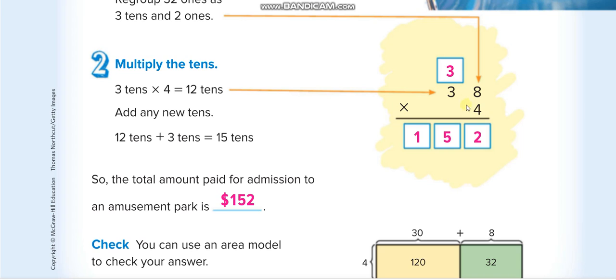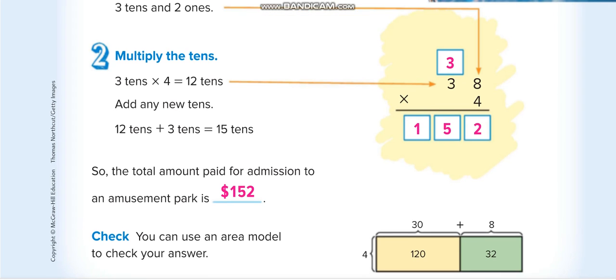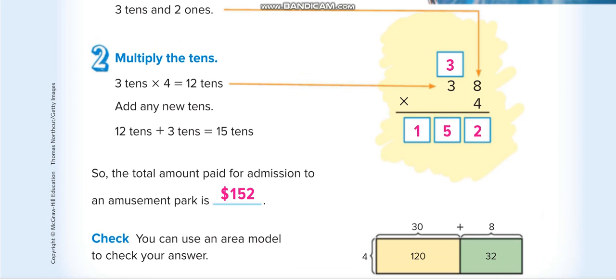Then 4 times 3, that is 12. 12 plus 3 equals 15, so 152. How you can check your answer? You can check your answer by dividing 152 with 4. If you get 38, it means your answer is correct.